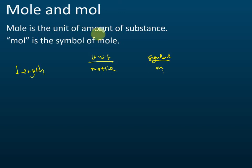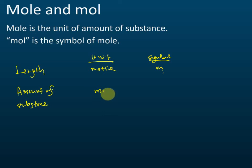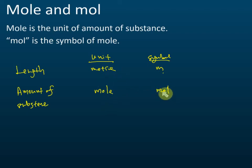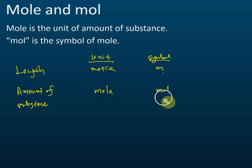For amount of substance, the unit is mole and the symbol is mol. Just like m is a short form of meter, mol is a short form of mole. So mole is the unit of amount of substance, and mol is its symbol.